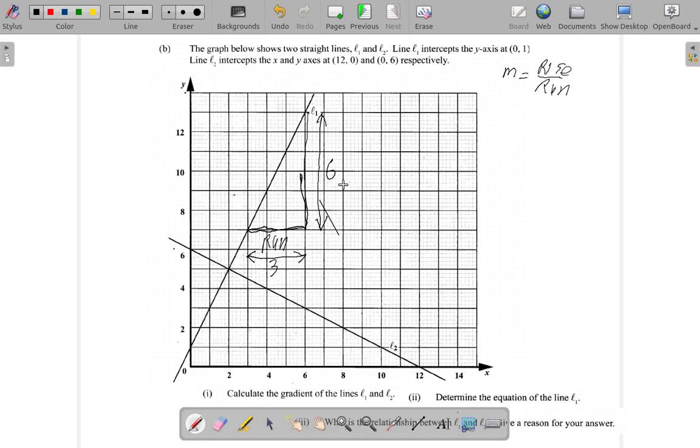So for L1, the gradient is rise which is 6 over run which is 3, and that gives you 2. So the gradient is 2.